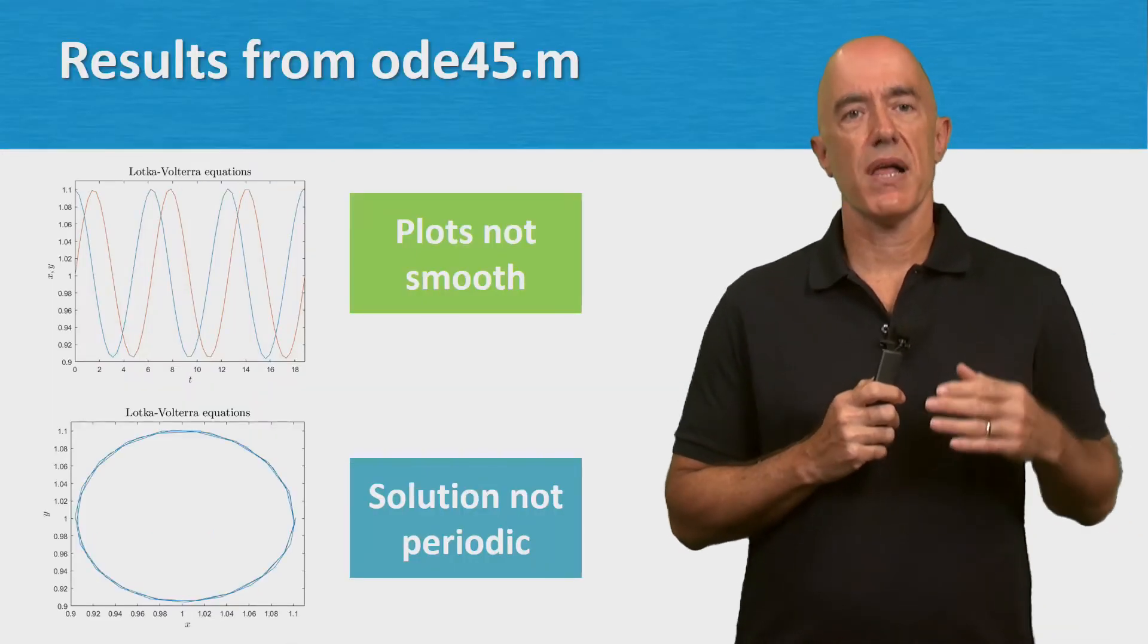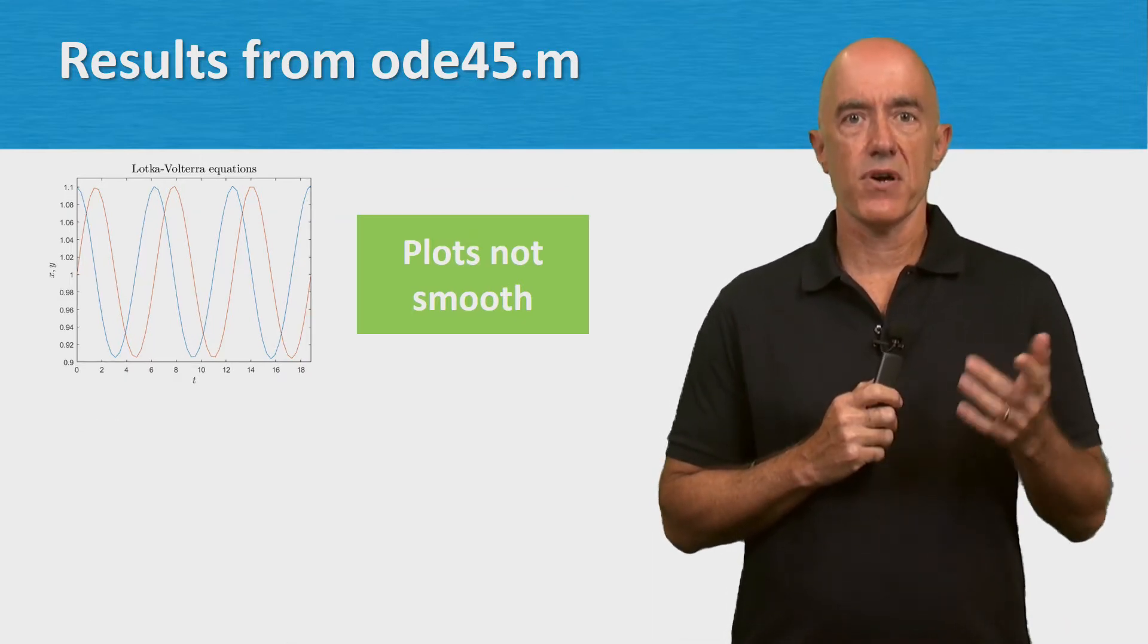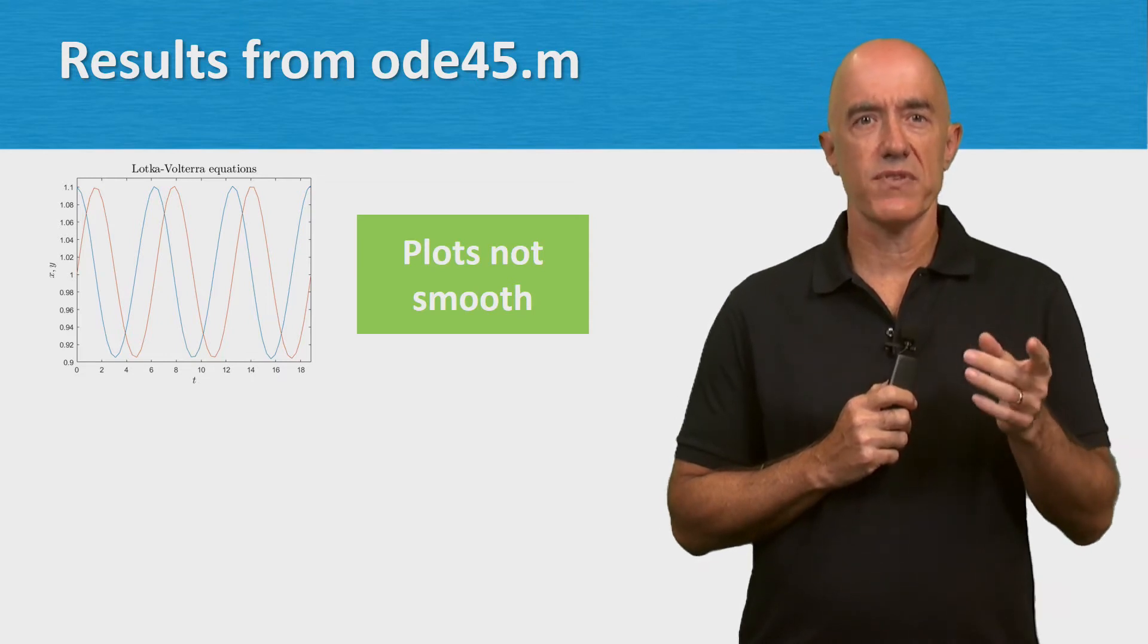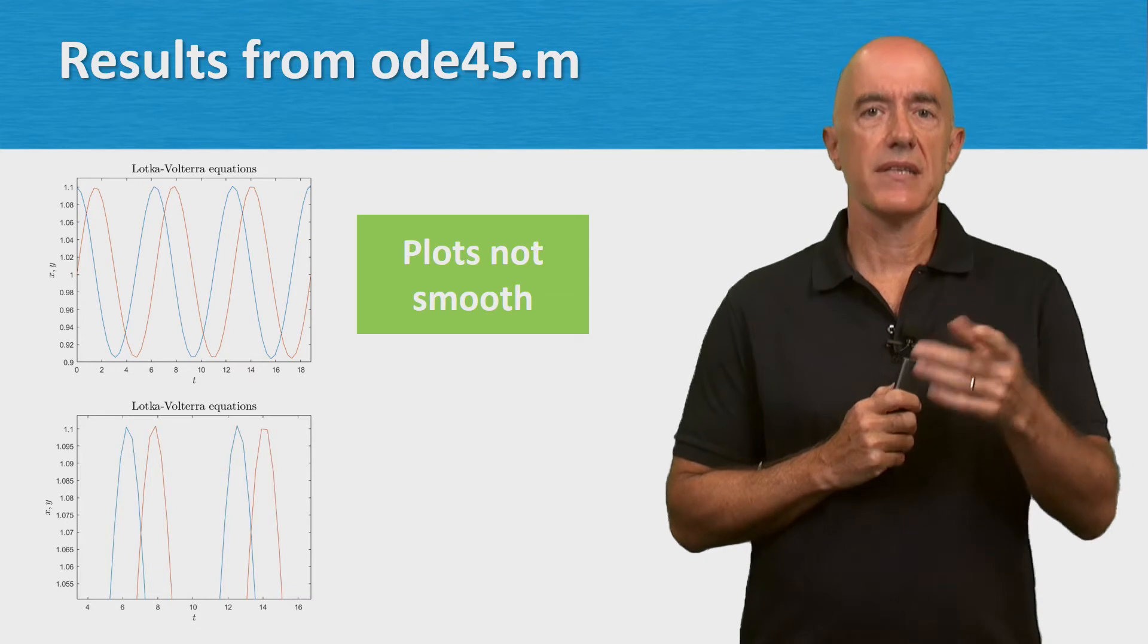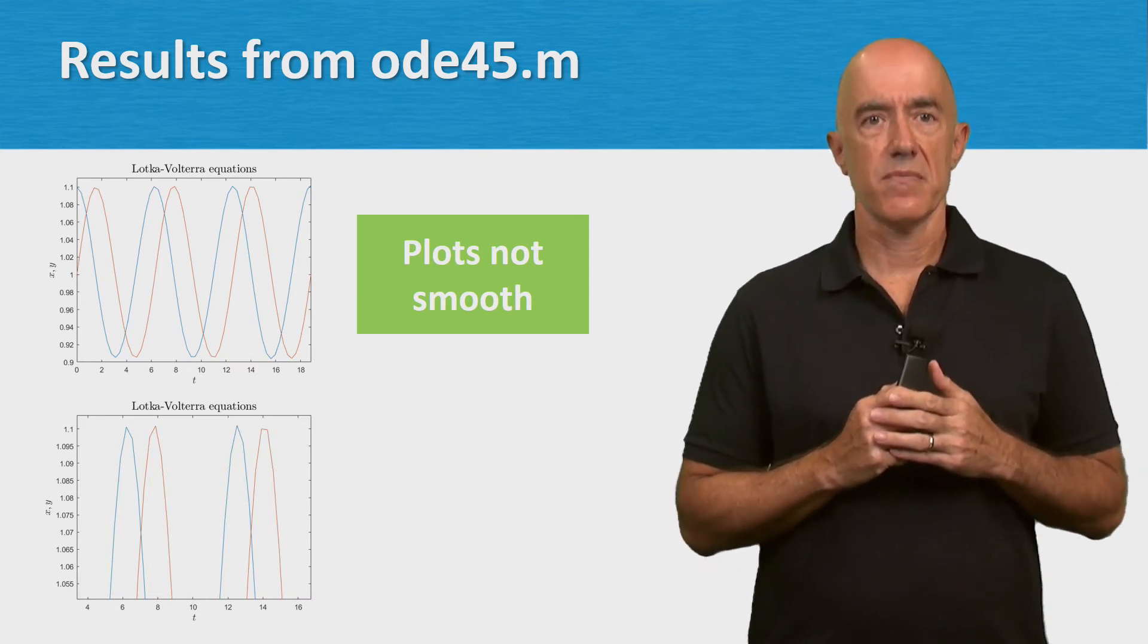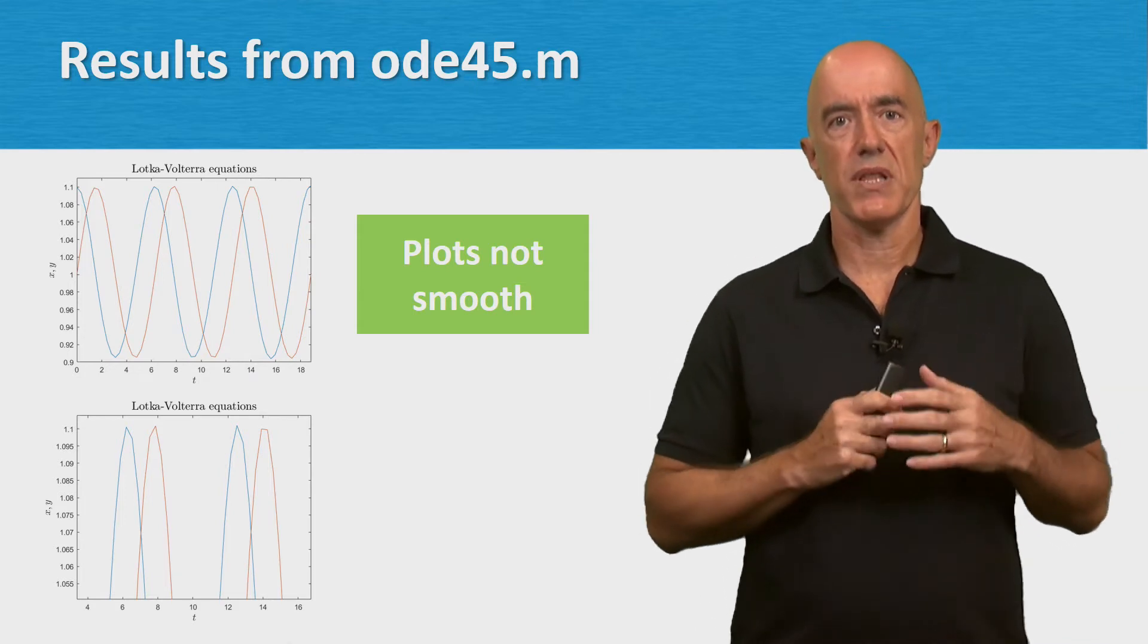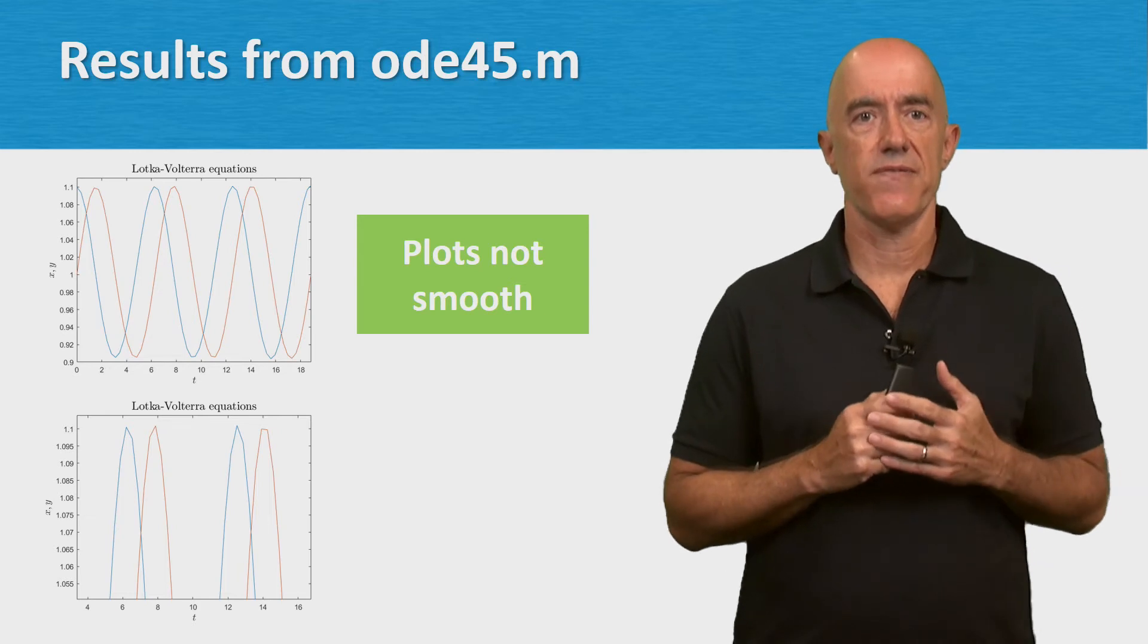Here are the two plots from our solution to the Lotka-Volterra equations. First, the x and y curves versus time are not smooth. We can see this more clearly if we zoom in to the figure. To make the plot smooth, we'll need to interpolate in time. We'll see how to do this using ODE45.